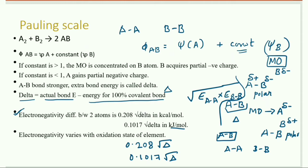Electronegativity varies with the oxidation state of an element. When the oxidation state changes, the electronegativity changes accordingly. So electronegativity depends upon the oxidation state of an element.